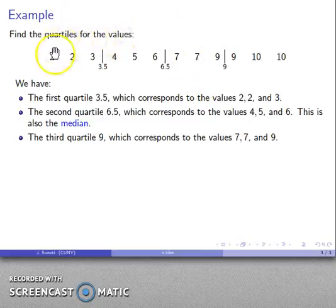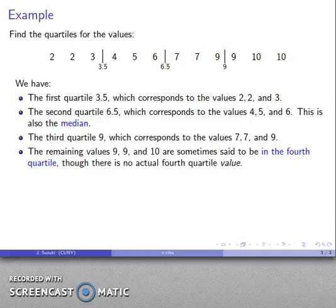Now, you'll notice that we've talked about the values in the first quartile, the values corresponding to the first quartile, the values corresponding to the second, the values corresponding to the third quartile. But then we have said nothing about these values. So sometimes we might say that they're the values in the fourth quartile. But keep in mind that there's no actual fourth quartile value. The quartiles are the dividing points. And there's only three of them. So there is no fourth quartile. But there are the remaining values.